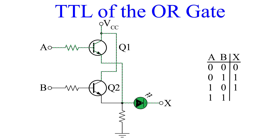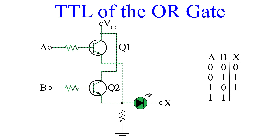Now we apply inputs to both A and B. This biases both transistors, so both transistors allow current to flow from their emitters into the LED, turning it on. For inputs A equals 1 and B equals 1, the output is also 1.